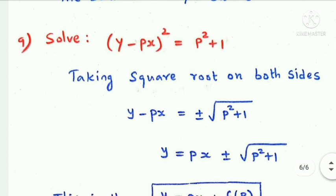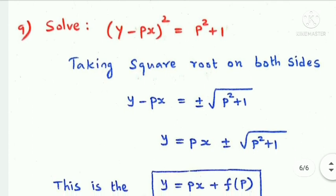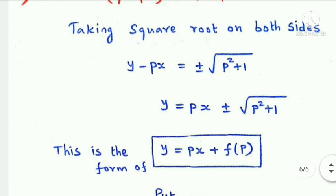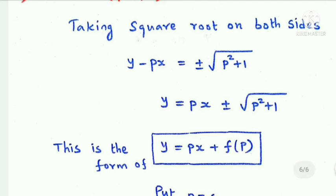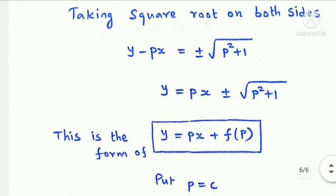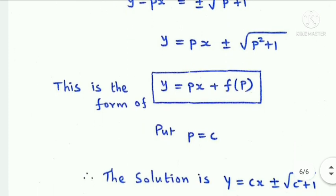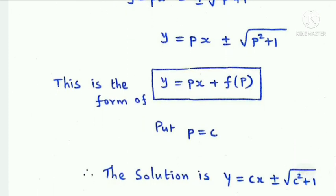This is in Clairant's form, y = px + f(p). Putting p equal to c, the solution is y = cx ± √(c² + 1).